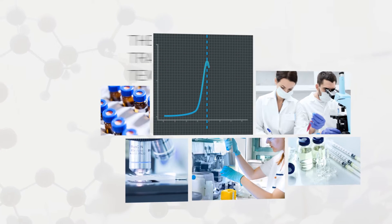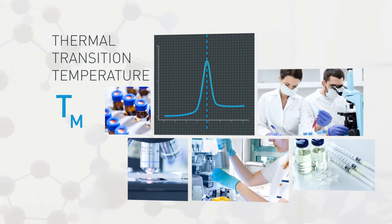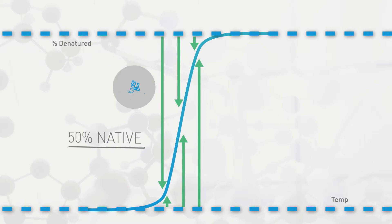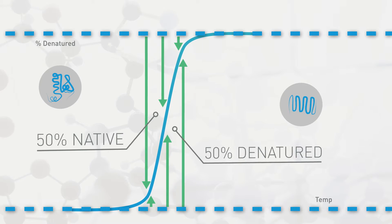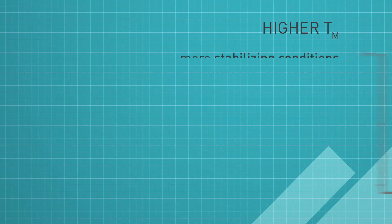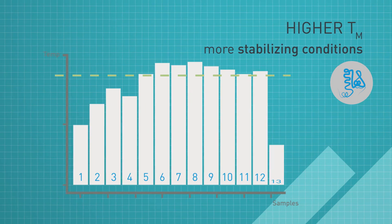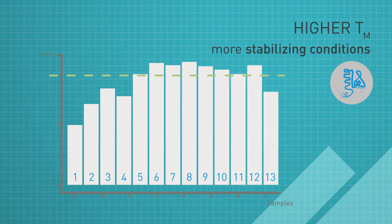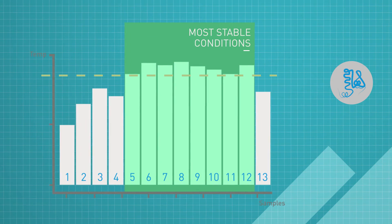DSC measures the protein's thermal transition temperature, or TM. For reversibly denatured proteins, the TM is the temperature at which 50% of the protein is native and 50% is denatured. Higher TMs correlate to more stabilizing conditions. Even if a protein is irreversibly denatured by heat, TM from DSC is still useful in rank ordering stability.